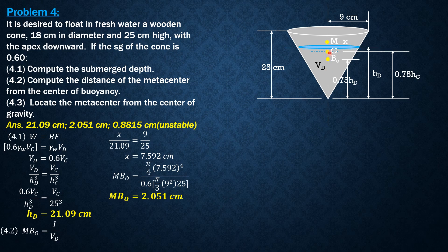And finally, the distance of the metacenter from G, assuming M is above G to be positive and stable. From the figure, MG is MBO minus GBO, and GBO equals 0.75 of 25 minus 0.75 of 21.09. So GBO is 2.9325 cm, which is greater than MBO.